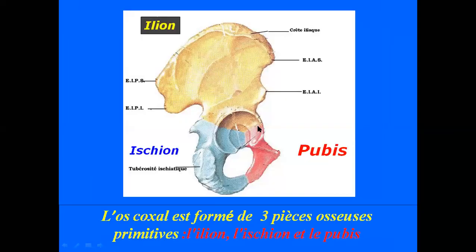L'os coxal est initialement formé par trois pièces osseuses primitives. Chez un fœtus, on ne trouve pas un os coxal unique, mais trois pièces osseuses qui vont, en fin de croissance, fusionner. La première pièce, c'est l'ilion. En bleu, c'est l'ischion, et en rouge, c'est le pubis. Ces trois parties sont séparées au centre par le cartilage de croissance, le cartilage en Y, qui disparaîtra à la fin de la croissance pour donner une seule pièce osseuse.